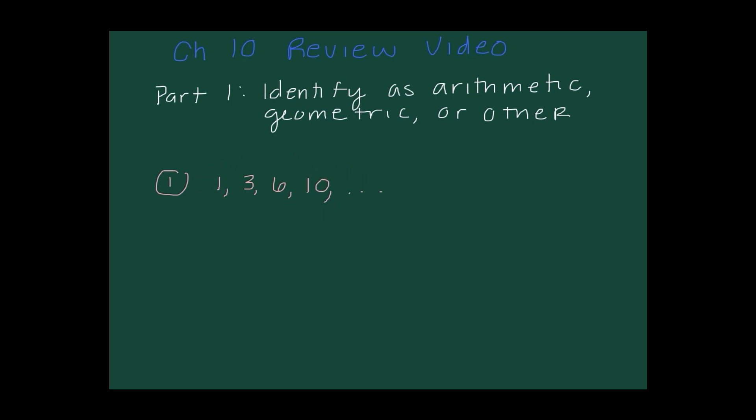Looking at this particular sequence, we need at least three consecutive terms to determine if it's arithmetic or geometric. First I'll check if it's arithmetic — the common difference is any term minus the previous term. It appears our common difference would be two, but one plus two is three, while three plus two is not six. So this is not arithmetic.